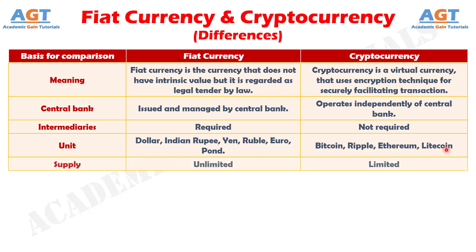Number 5: When it comes to supply, fiat currency has an unlimited supply as it can be printed as per the need. On the other hand, cryptocurrency has a limited supply.